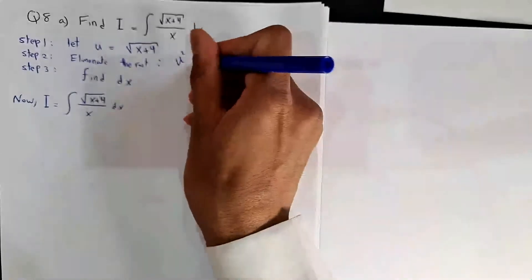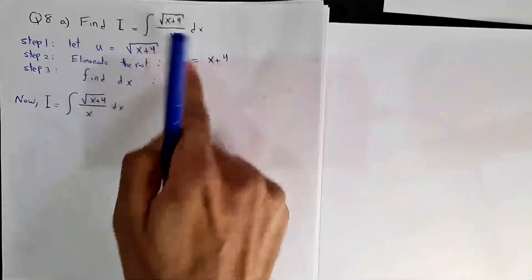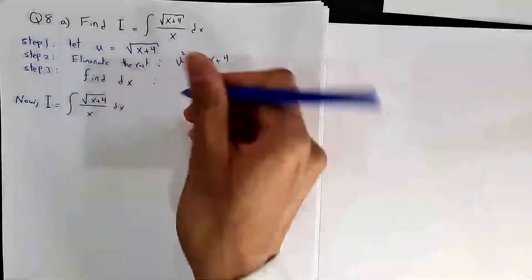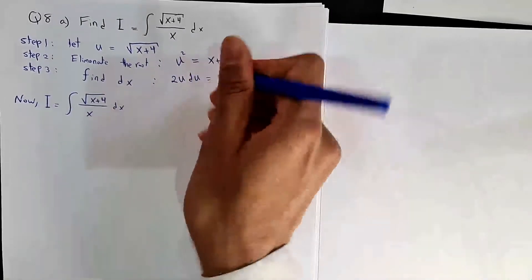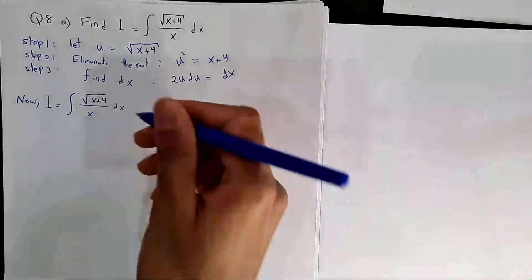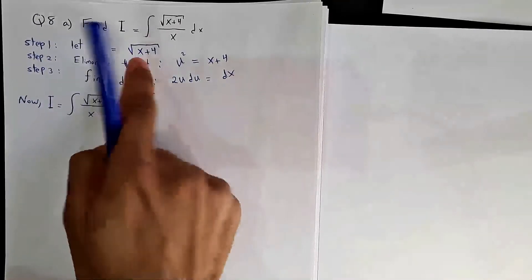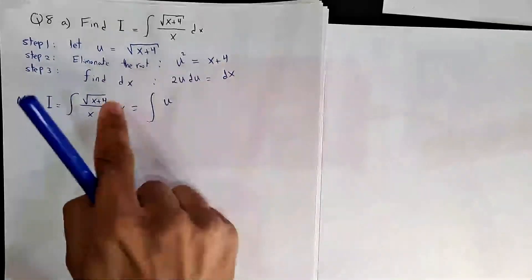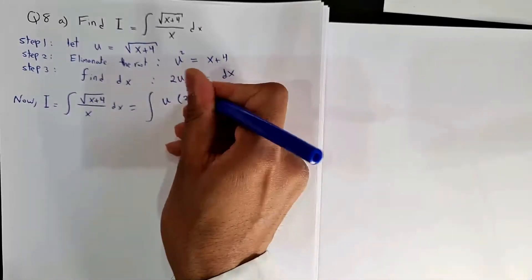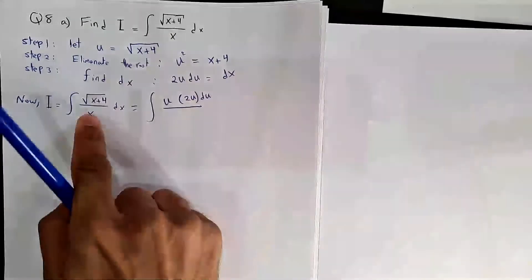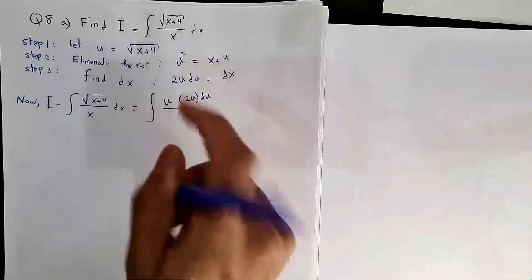Take power 2 for both sides to get u² = x + 4. Now find dx from here by differentiating both sides: you get 2u du = dx. Now in this integral, the root is replaced by u, dx is 2u du, and x is u² − 4.